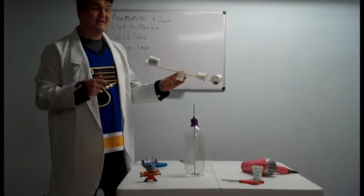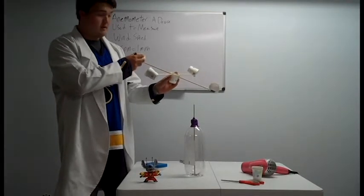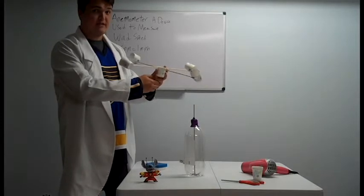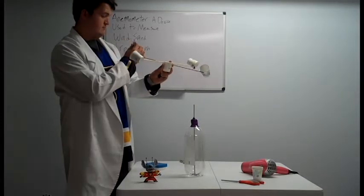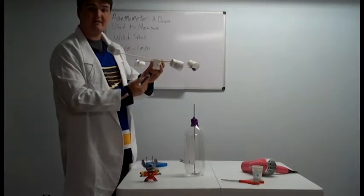So, always remember, before beginning this experiment, you have to put an X on the back of one of your anemometer pieces. That way, you know how many rotations it's been. So, now we're ready to start.